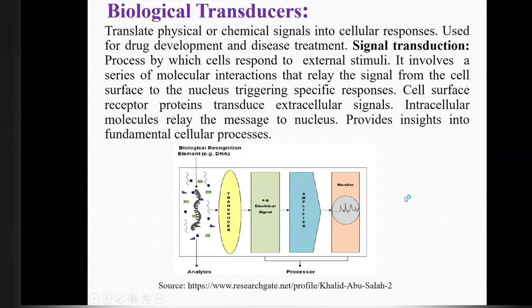Next is the biological transducer. It translates physical or chemical signals into cellular responses and is used for drug development and disease treatment. Signal transduction is the process by which cells respond to external stimuli, involving molecular interactions from the cell surface to the nucleus, triggering specific responses. Cell surface receptor proteins produce extracellular signals, and intracellular molecules relay the message to the nucleus, providing insight into fundamental cellular processes.